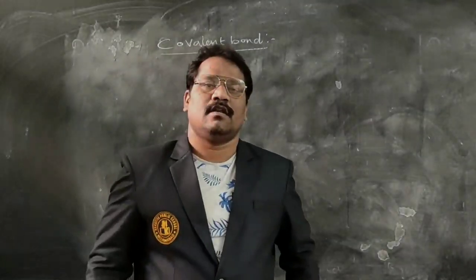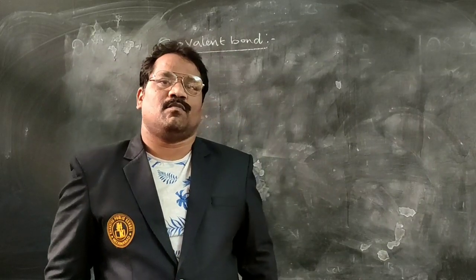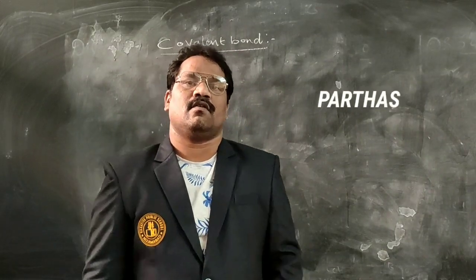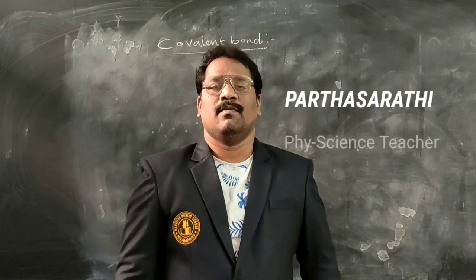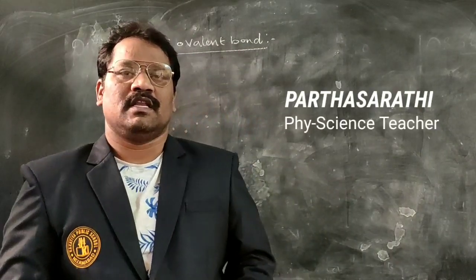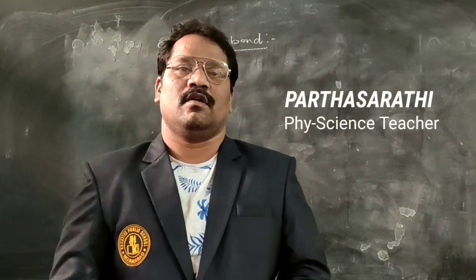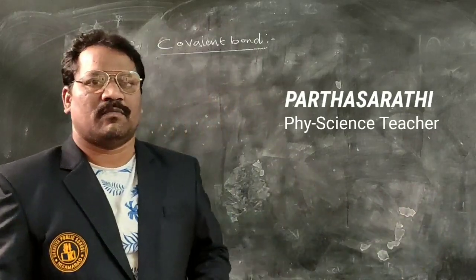Okay children, till now we have seen three types of covalent bonds: single covalent bond, double covalent bond, and triple covalent bond. Now we will look at some other forms of covalent bonds.